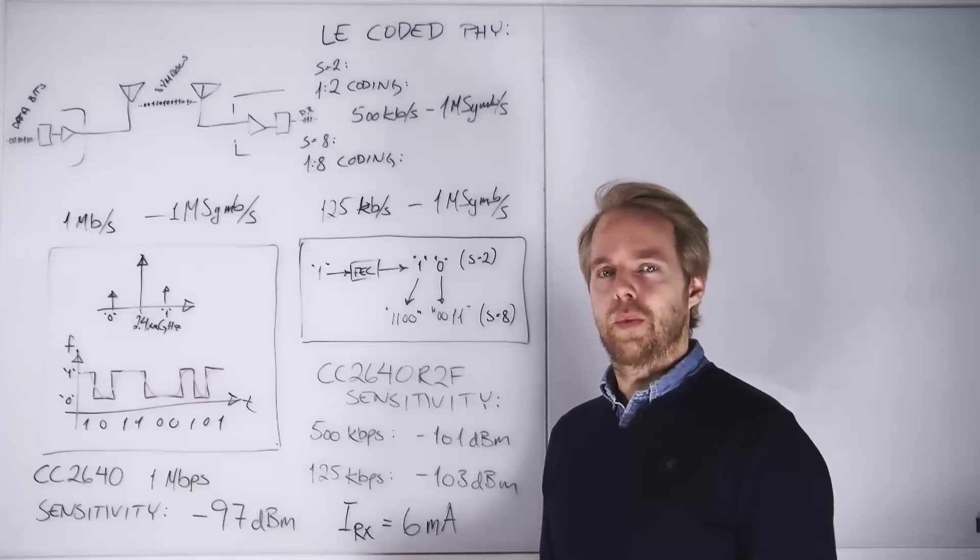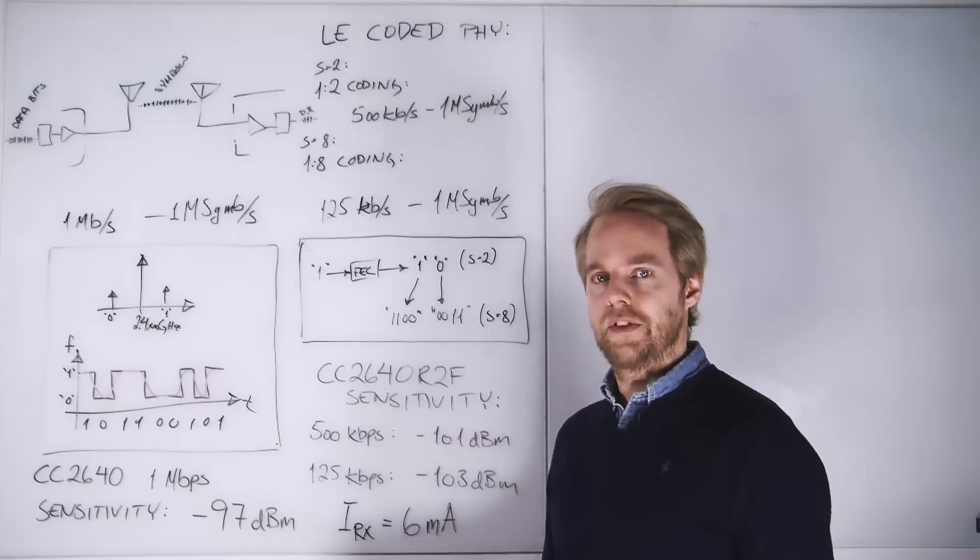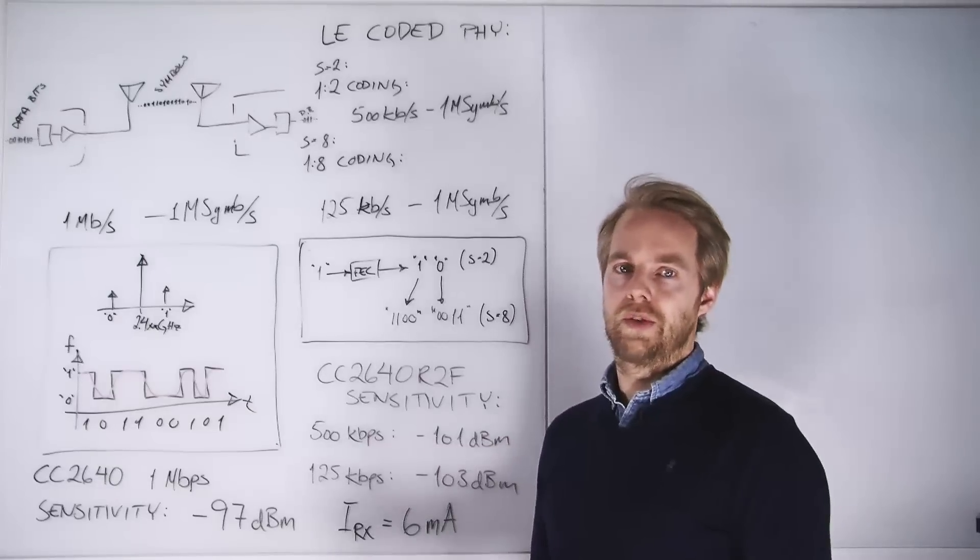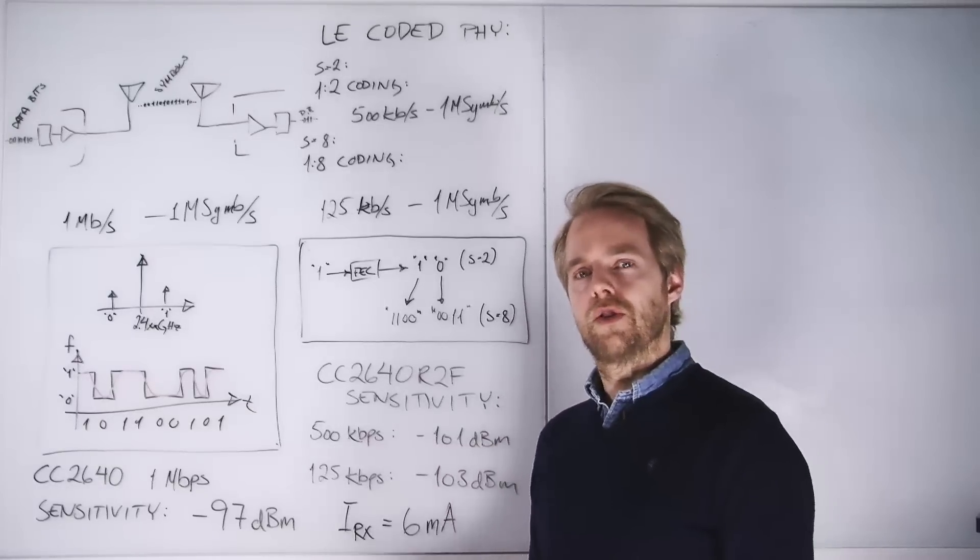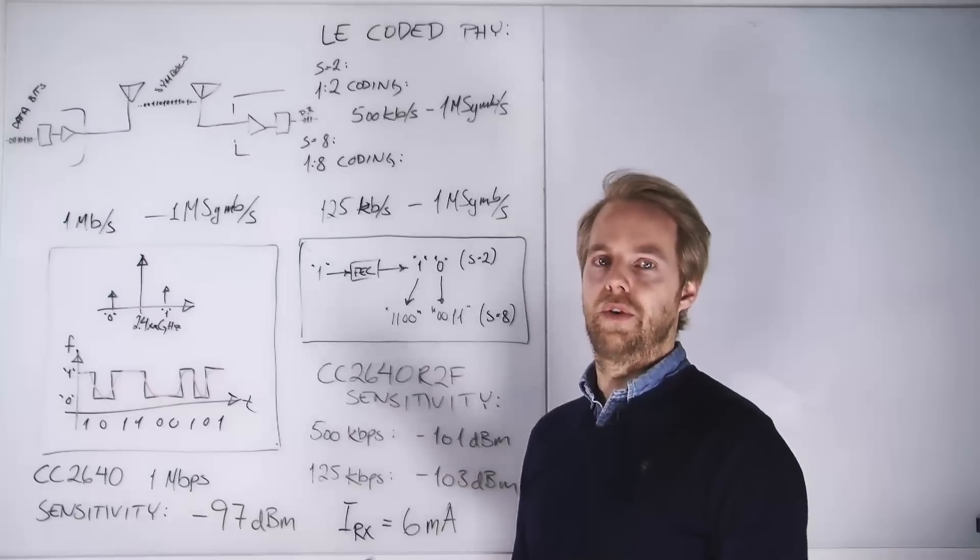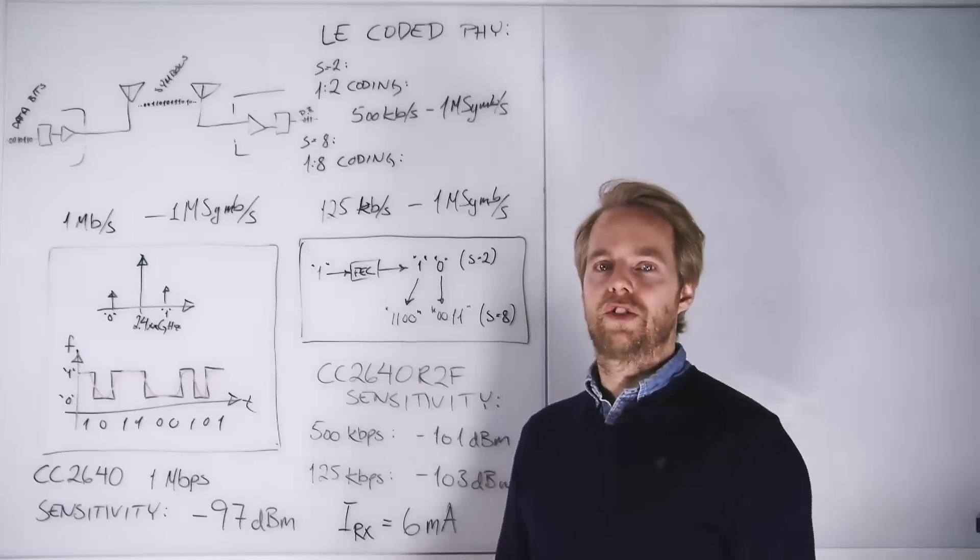So how does this work? Well there are several ways you can improve your link budget. One obvious way is of course to increase the output power in your system, but that will also increase your current consumption. So what Bluetooth SIG chose to do was to improve the sensitivity of your receiver instead, and the way they did that was through coding.